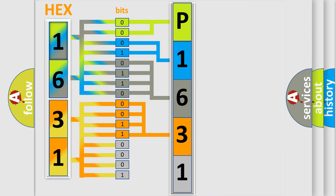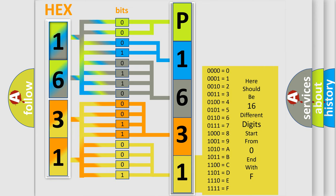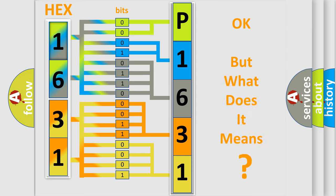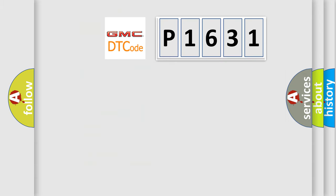A single byte conceals 256 possible combinations. We now know in what way the diagnostic tool translates the received information into a more comprehensible format. The number itself does not make sense if we cannot assign information about what it actually expresses. So, what does the diagnostic trouble code P1631 interpret specifically for GMC car manufacturers?